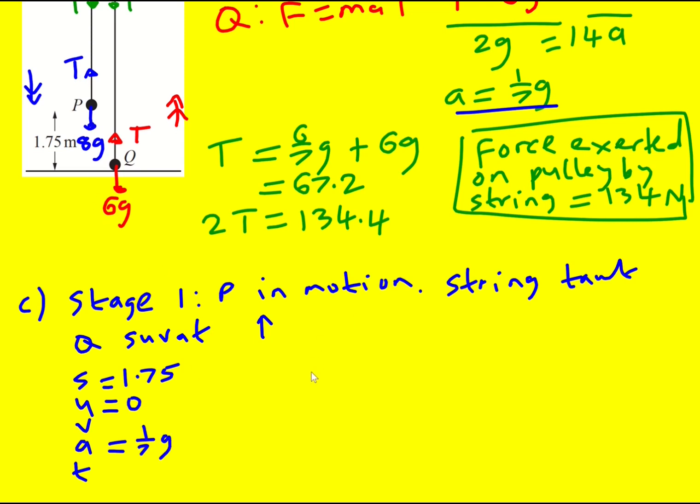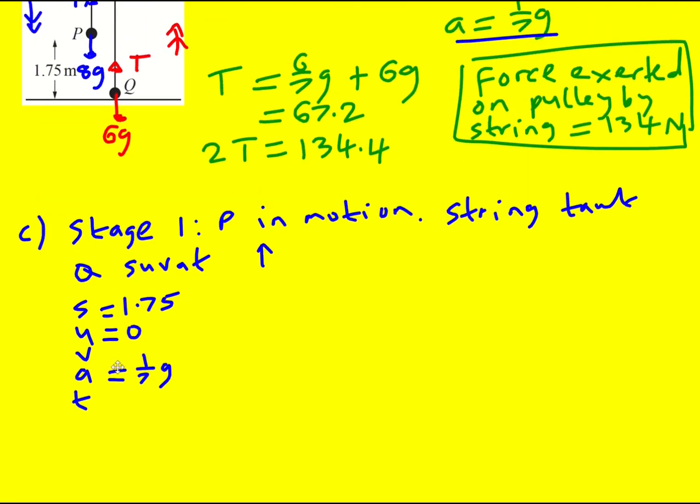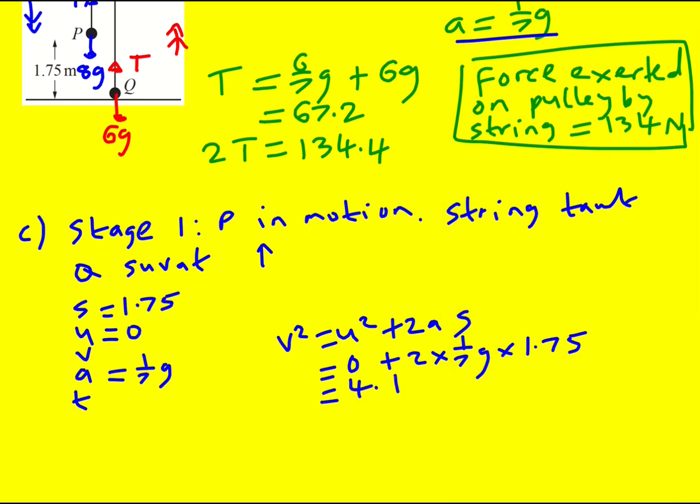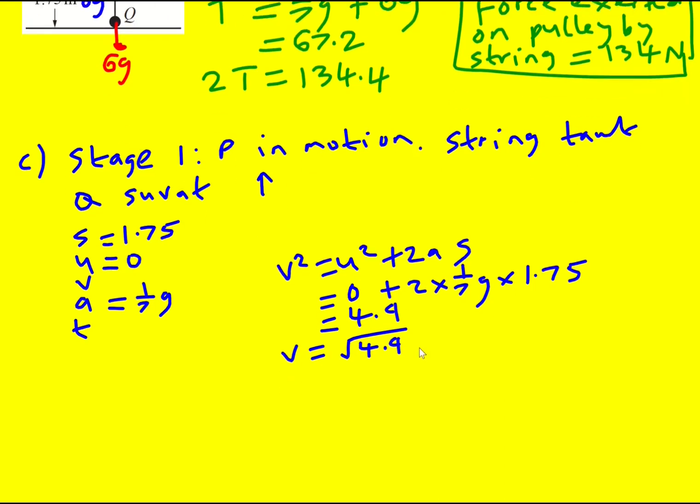So the whole reason for me doing this is that I can find the final velocity. I'm not interested in how long it takes. I can find the final velocity and that will actually be the initial velocity in stage two because we've got two stages of SUVAT. So V squared equals U squared plus 2AS. So it's just going to be zero plus 2 times 1 over 7G times 1.75 and we get 4.9. So V is going to be the square root of 4.9 which is not a very nice number. So I'm actually just going to leave it like that for the moment. Leave it exact.